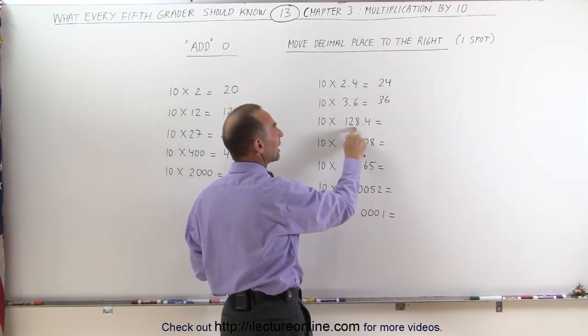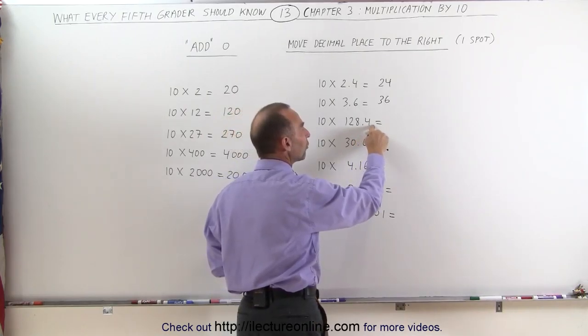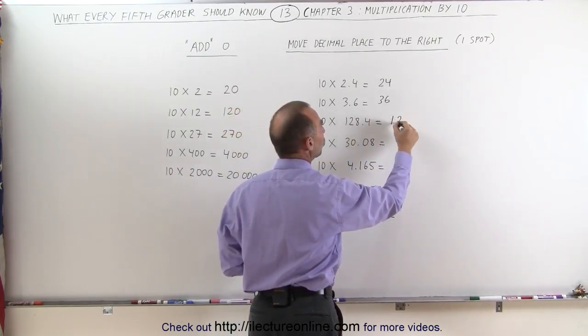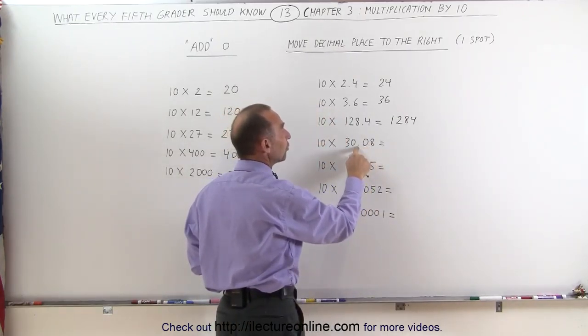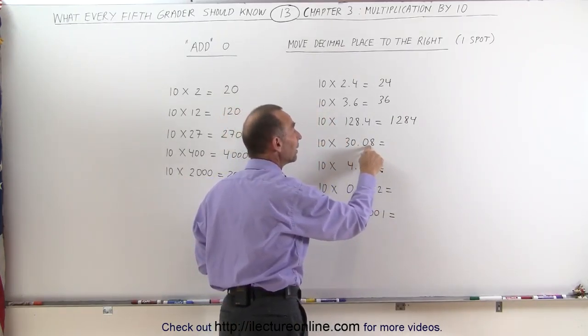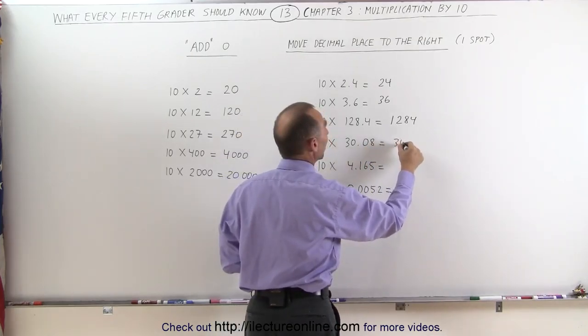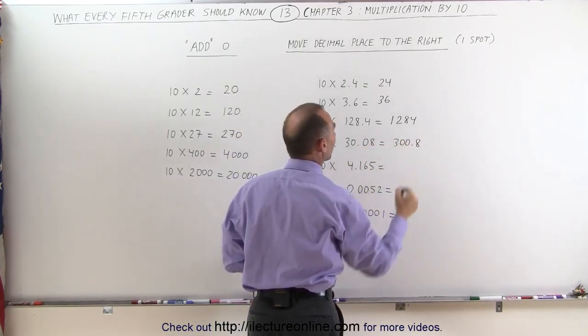10 times 128.4, move the decimal place over one, you get 1,284. If you have something like this where there's two decimal places, you still move the decimal place over one spot, and this will then become 300.8.